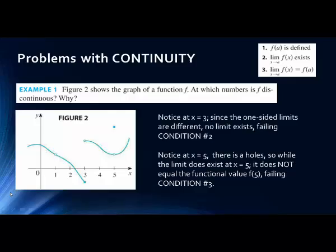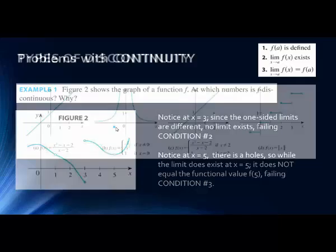For x equals 1, we have a hole, and this is failing condition 1. So we have an example of condition 1 failing — a hole — condition 2 failing — a jump — and condition 3 failing — a hole where there's a different value defined.